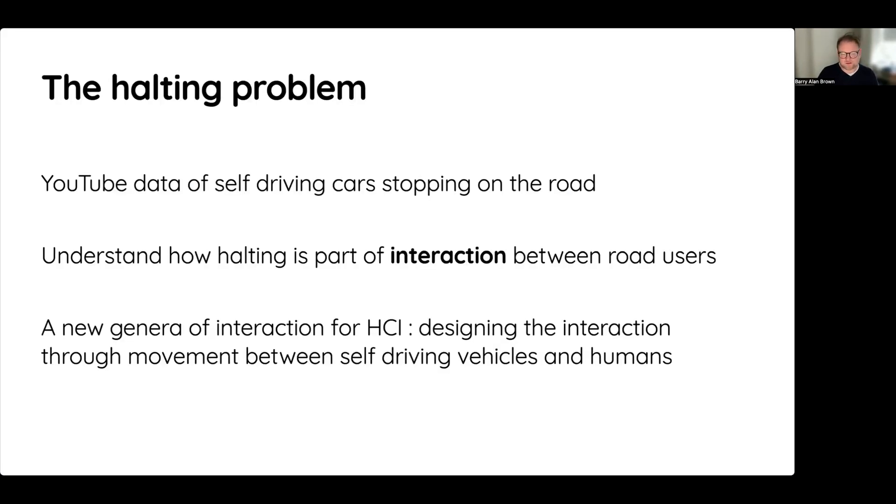The paper is based around a collection of YouTube data we've put together of different self-driving car systems, focusing on this issue where these cars can often stop on the road in sometimes problematic ways. Our goal is not to review or evaluate those systems, but really to understand what's going on in these interactions these self-driving cars are having on the road, and in particular the role that halting plays and why by sometimes halting incorrectly these cars are getting into some interaction problems.